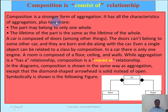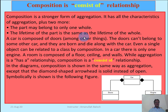Composition has all the characteristics of aggregation plus two more. First, the part may belong to only one whole — in aggregation, a part can belong to many objects. Second, the lifetime of the part is the same as the lifetime of the whole. In aggregation, if a book is lost, the library remains. But in composition, if the part is destroyed, the whole is also destroyed.